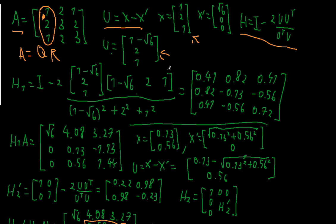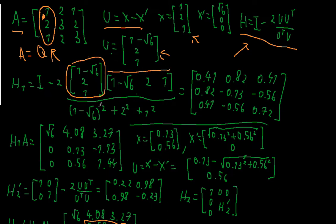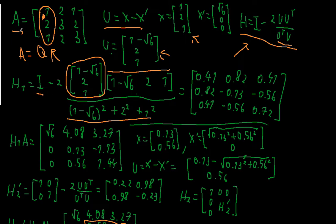Now I can plug everything into my Householder formula to get my Householder matrix. I plug in my vector u and u transpose here, and the dot product of the vector u with itself — written as u transpose u — which is the first component squared of vector u: (1 minus square root of 6) squared plus 2 squared plus 1 squared. The identity matrix is 3x3 because A is a three-by-three matrix.